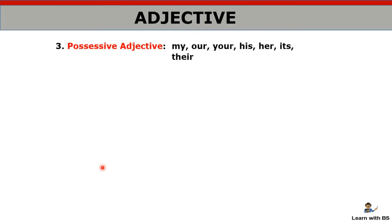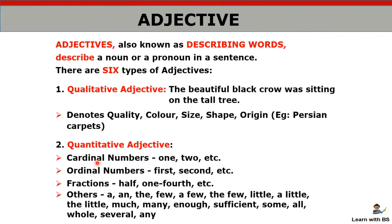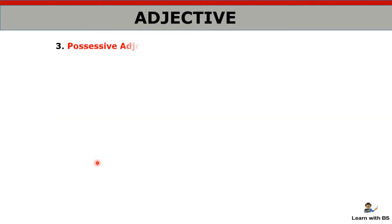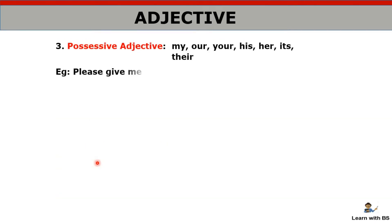Then we have possessive adjectives — my, your, his, her. One thing to note: we also have possessive pronouns, which use words like 'mine', 'ours', 'yours', 'theirs'. Those are pronouns. But when these come before a noun — 'my book', 'our house', 'your dish' — then the word coming before the noun is a possessive adjective, not a possessive pronoun.